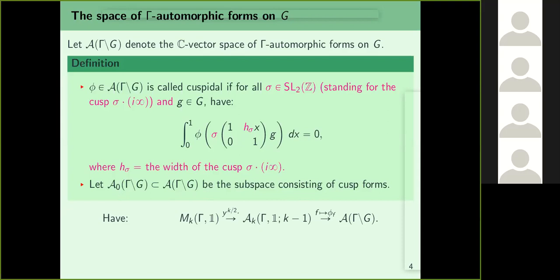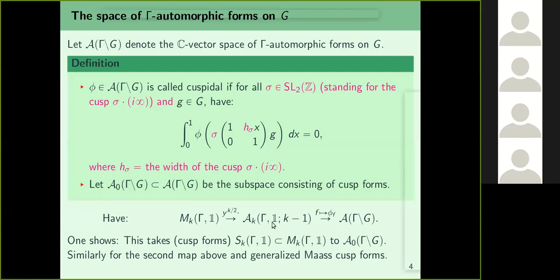Recall M_k(Gamma, 1) — classical modular forms for Gamma. If you multiply by y^{k/2}, you land in A_k(Gamma,1,s), and the map f to phi_f lands in A(G/Gamma). The fact I state without proof is that this takes the space S_k(Gamma_1) of cusp forms into A^0(G/Gamma). Similarly the map from A_k(Gamma,1,s) sending f to phi_f takes generalized Maass cusp forms into A^0(G/Gamma). So A^0(G/Gamma) is the space of cusp forms generalizing S_k(Gamma,1).